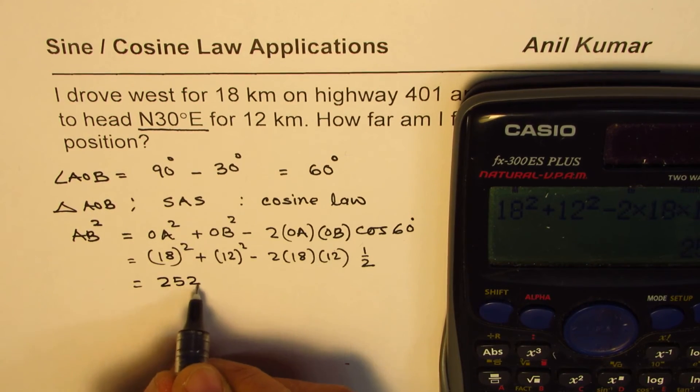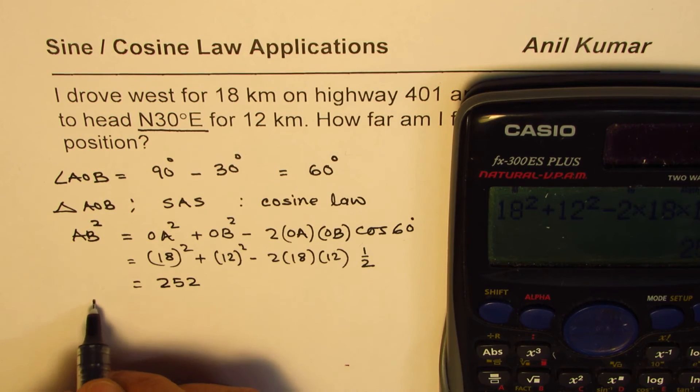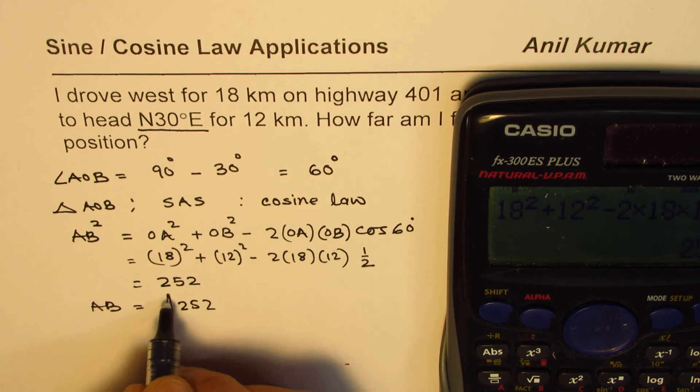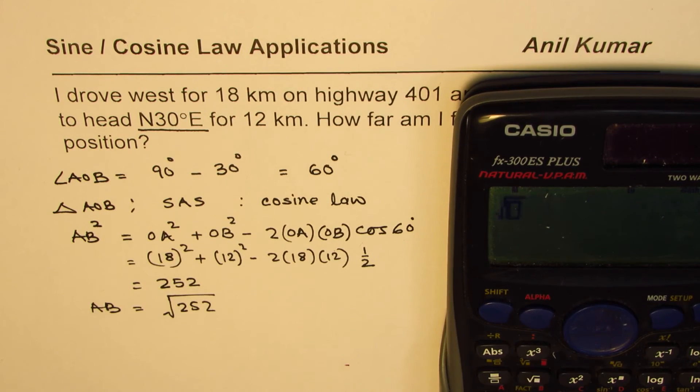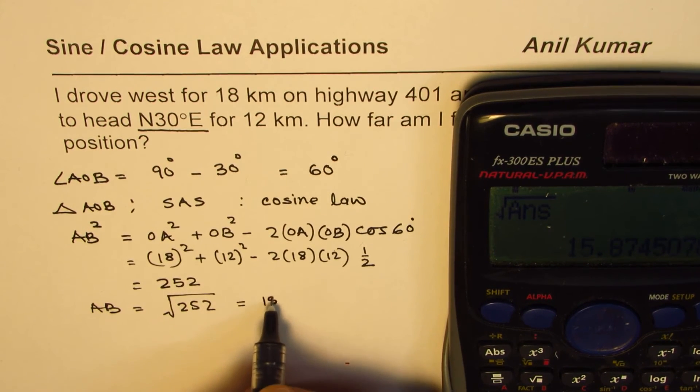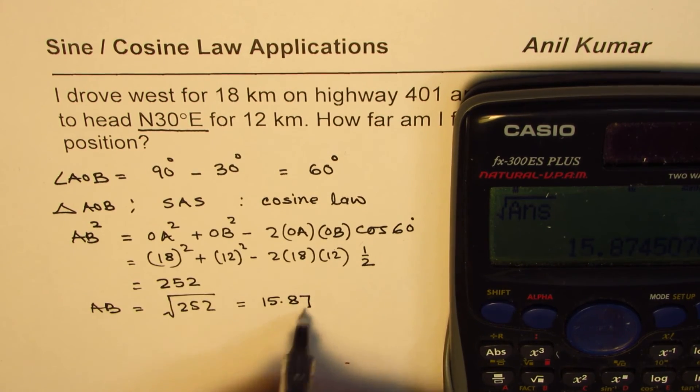Whatever you get is the distance squared. 252 is distance squared. So what is AB? It has to be √252. We do square root of our answer which is equal to 6√7, and in decimals we could write this as equals to 15.87.